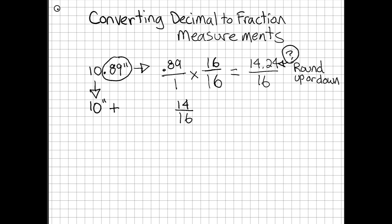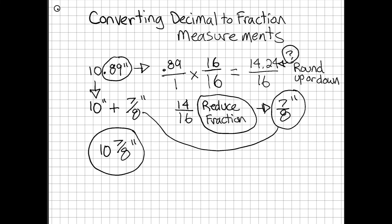This would give me 14 over 16. The fraction 14 over 16 can be reduced by dividing both the 14 and the 16 by 2, so we end up with 7/8 of an inch. Let's take that and add it back to our 10 inches that we held on to before. So now we have 10 inches plus 7/8 of an inch equals 10 7/8 inches. We've been able to convert our decimal of 10.89 to 10 7/8.